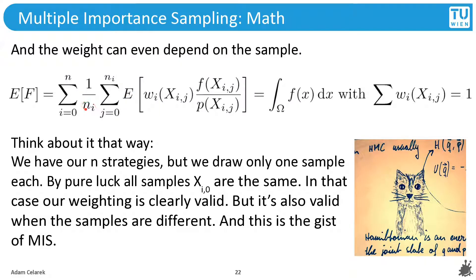Say this n, so this is the number of samples per strategy, is 1. So this goes away. And say, by pure luck, all of these samples, x_i, now it's 0, because this is 1, are all the same. So for each strategy, we have the same sample, just by pure luck. In that case, it's clear that this will sum up to 1, because this is how we defined it. And therefore, this estimator will be unbiased.